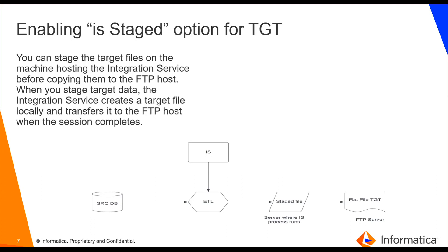With the staged option you can avoid partial transfers. If there are any network failures, you can avoid partial transfers using this option. But if you are not using the stage option for staging source or target files, and the session fails due to a network failure, then you have to rerun the session. That is the advantage of using the staged option. In the next slides we are going to see the complete demo on what we have discussed so far.